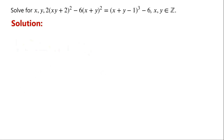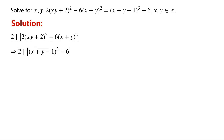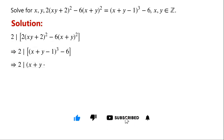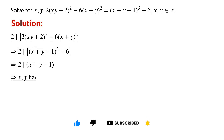There are two variables in one equation. We notice that 2 divides the left-hand side of the equation. So 2 must divide the right-hand side of the equation. As 2 divides 6, so 2 divides x plus y minus 1. This implies that x and y have opposite parity.